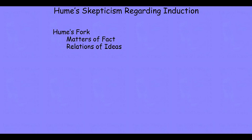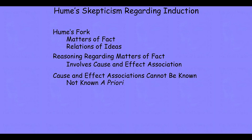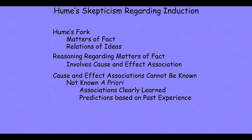We'll discuss what matters of fact are and what relations of ideas are. Then we'll turn our attention to Hume's discussion of reasoning regarding matters of fact — namely that all matters of fact involve cause and effect associations, even though they may also involve other operations of association. Then we'll look at his argument that cause and effect associations cannot be known a priori, and whether or not these associations are learned and constitute predictions based upon past experience.